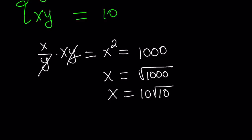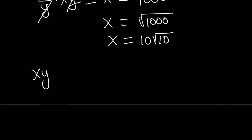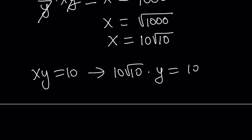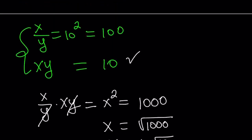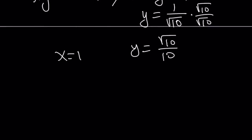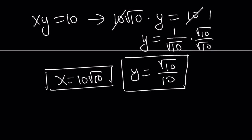So that is the x value, and we get a single value because x and y have to be positive. Now from here we can find y by using one of the equations. Suppose you use xy equals 10 — replace x with 10√10, so 10√10 times y equals 10. Divide both sides by 10 and you get y equals 1 over square root of 10, which you can rationalize to get square root of 10 divided by 10. And x was 10 times the square root of 10 — one of them is 10√10, the other is one-tenth of √10.